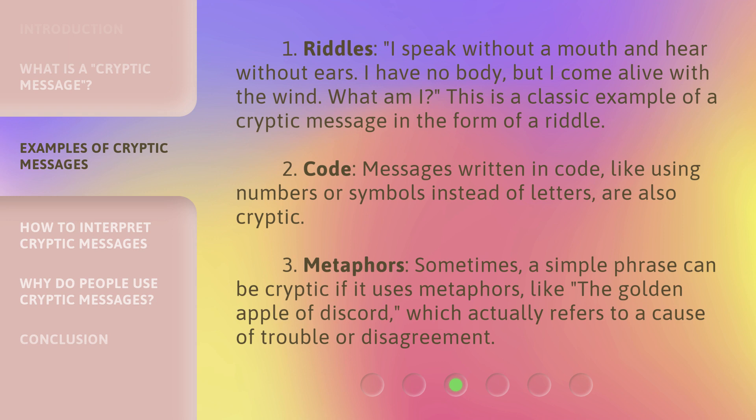3. Metaphors. Sometimes, a simple phrase can be cryptic if it uses metaphors, like "the golden apple of discord," which actually refers to a cause of trouble or disagreement.